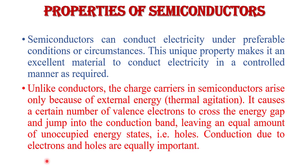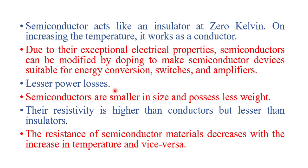Conduction due to electrons and holes is equally important in semiconductors — current flows due to both. A semiconductor acts like an insulator at zero degrees Kelvin, but on increasing the temperature it works like a conductor. Due to their exponential electrical properties, semiconductors can be modified by doping to make semiconductor devices suitable for energy conversion, switches, and amplifiers. Semiconductors also have lesser power losses and are smaller in size with less weight.